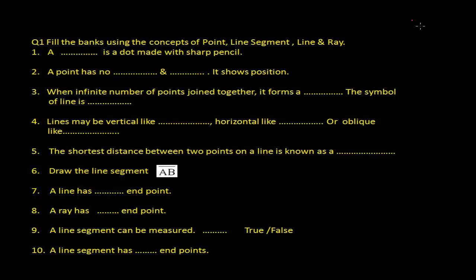As we discussed in the previous video, a point is almost invisible — it is such a small structure made with a very, very sharp pencil that it's almost invisible. So the answer is: a point is a dot made with a sharp pencil.